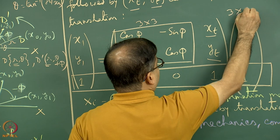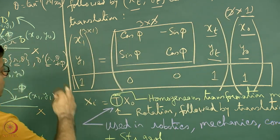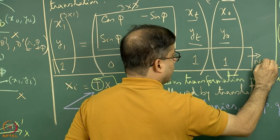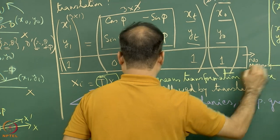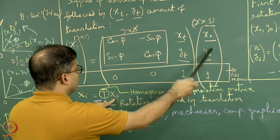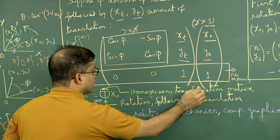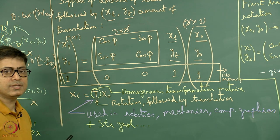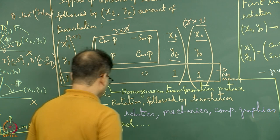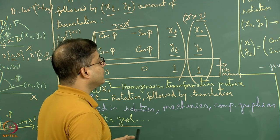The result is a 3×1 matrix output from a 3×3 matrix times a 3×1 vector. The extra row has no actual physical meaning, but is required for correct matrix multiplication. In compact form, Xi = T * X0, where T is called the homogeneous transformation matrix, representing a homogeneous deformation. This type of matrix is used in robotics, mechanics, computer graphics, and structural geology to study deformation.